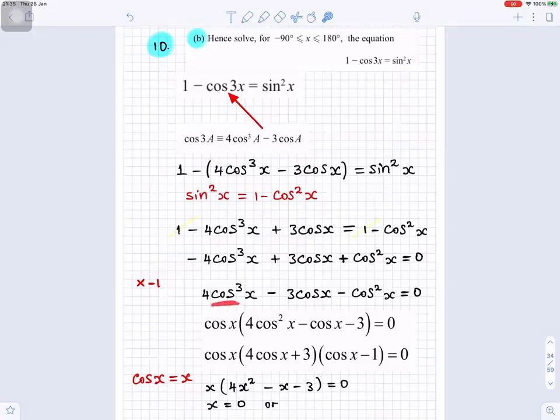Cosx is found in all three of them. So, you take cosx out of the bracket, like factorize. So, you got cosx there. And you'll be left with 4 cos²x minus cosx minus 3. The cosx comes from there, and the 3 comes from there. Equal to 0.